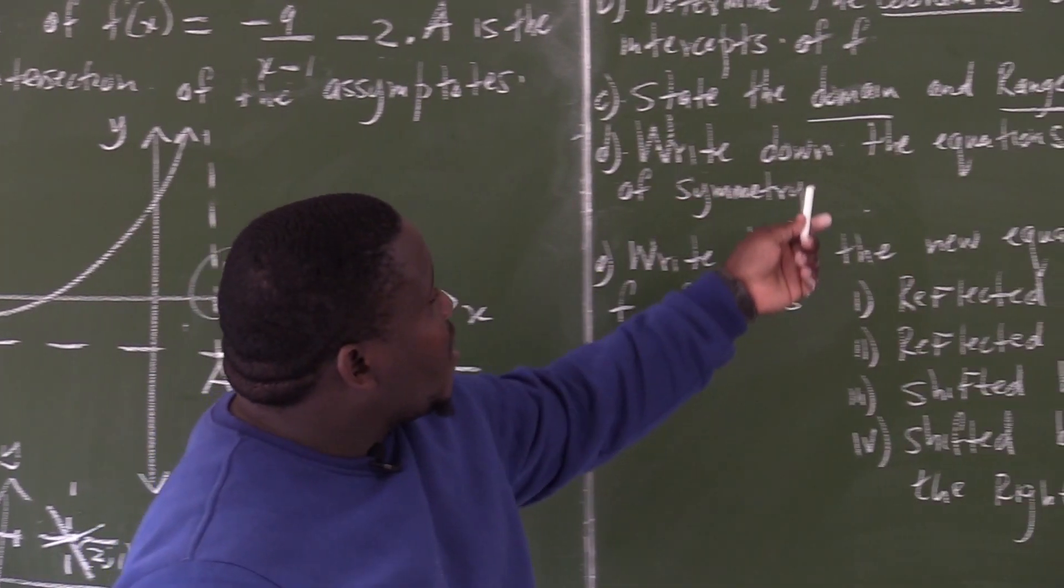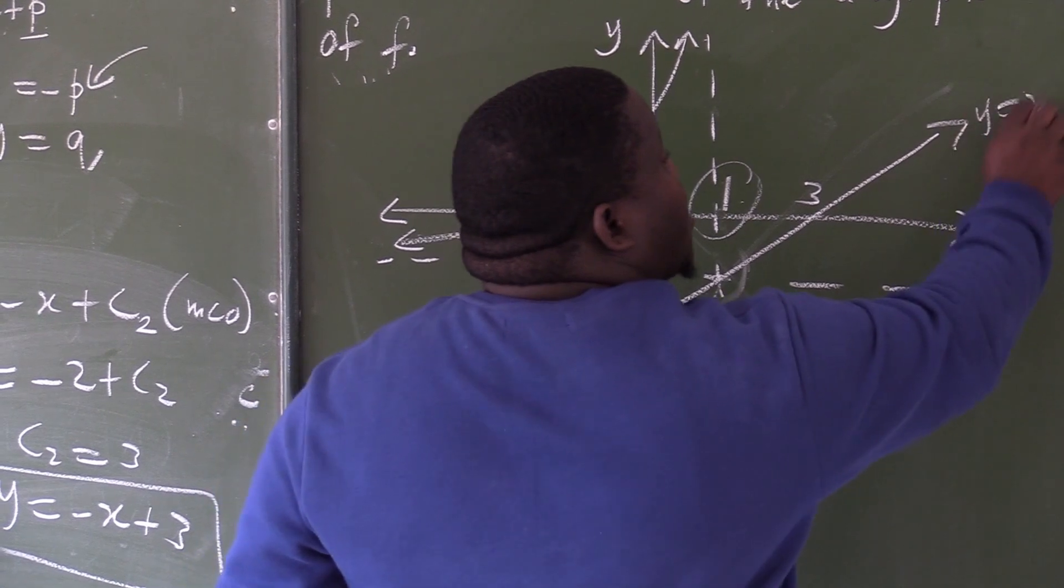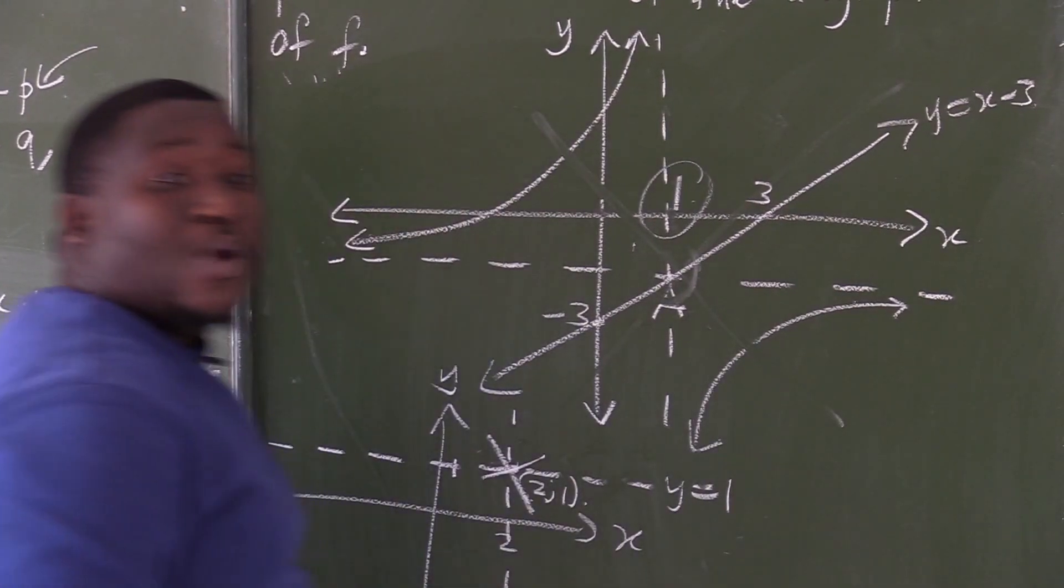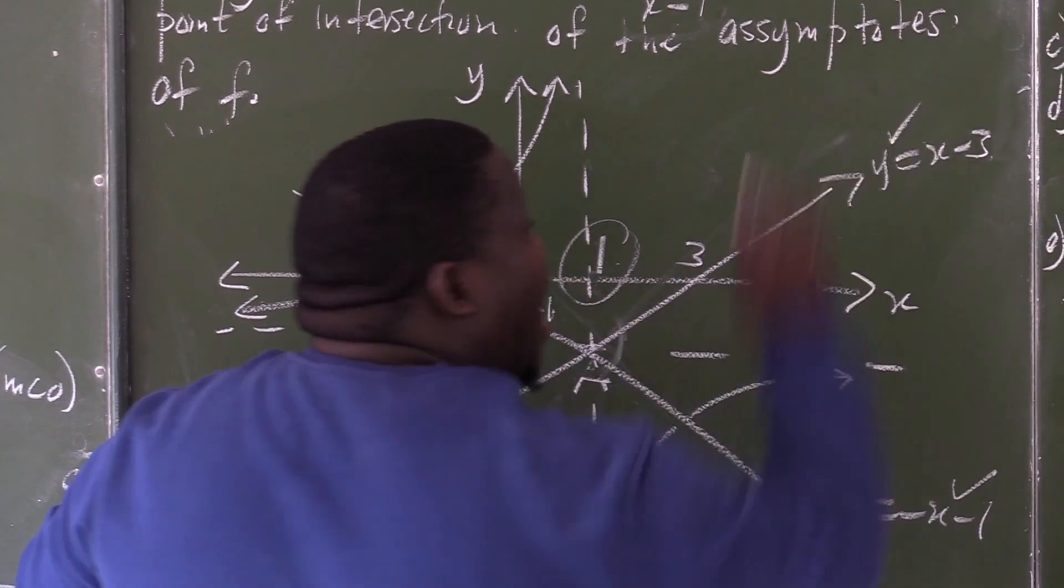Write down the equations of the axis of symmetry. This is the equation that says y equal to x minus 3. That is your line of symmetry.